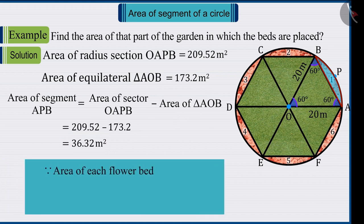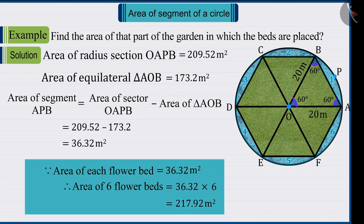That is, the area of each flower bed is 36.32 square meters. Therefore, we can say that the area of the total flower beds is 217.92 square meters.